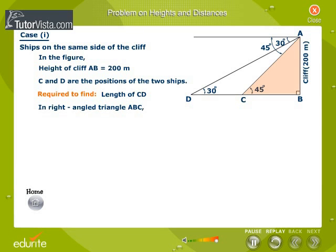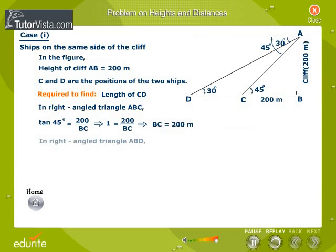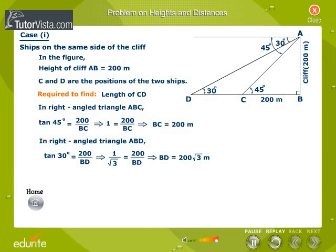In right-angled triangle ABC, tan 45 is equal to 200 by BC, which implies that 1 is equal to 200 by BC. In right-angled triangle ABD, tan 30 is equal to 200 by BD, which implies that 1 by root 3 is equal to 200 by BD. Therefore, BD is equal to 200 into root 3 metres.